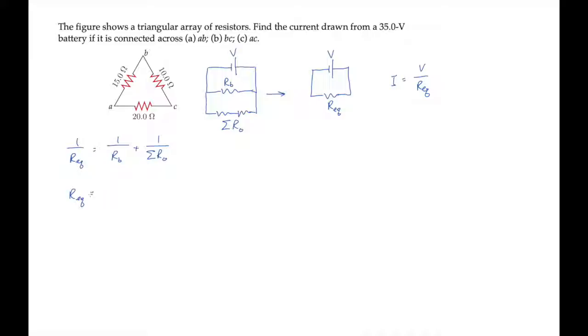If we simplify this algebraically, we find the equivalent resistance is the product of the resistance across the battery times the sum of the other resistances, divided by the sum of those same terms.